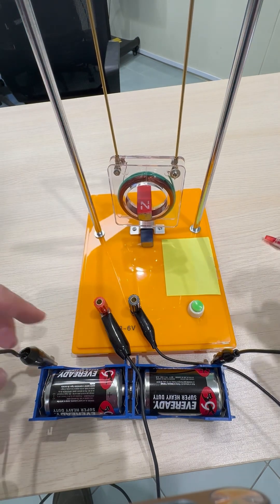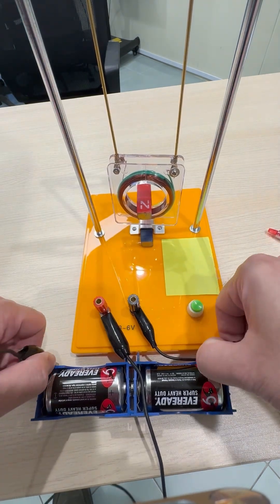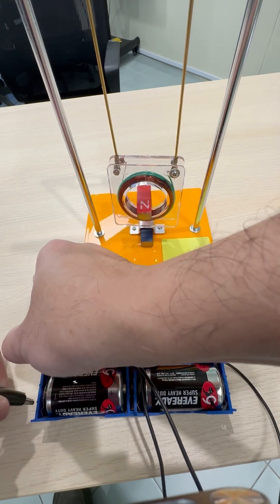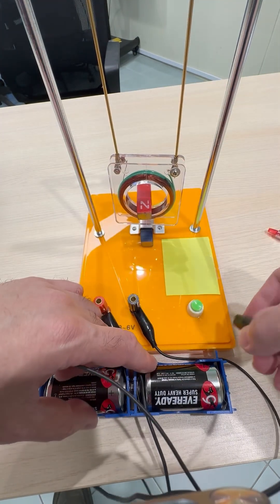What happens if we reverse the current? Over here we reverse it. Now the current will be flowing from left to right.